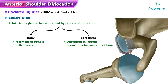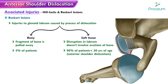Soft tissue Bankart lesions are more common, accounting for approximately 90% of patients below 30 years of age with anterior shoulder dislocations. Bony Bankart lesions are found in about 5% of patients. Both types are more frequently observed in cases of recurrent shoulder dislocations.